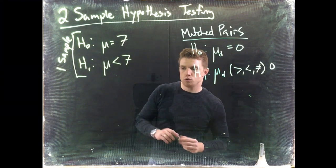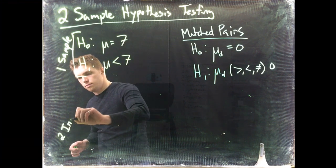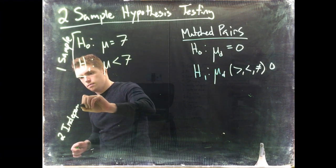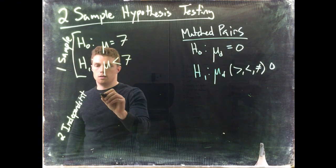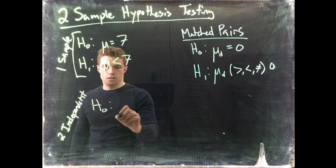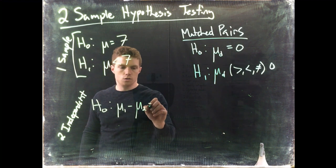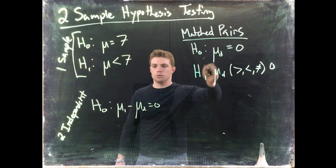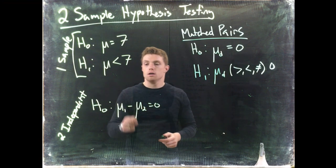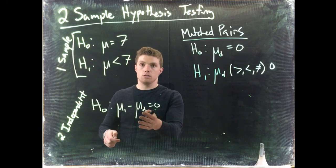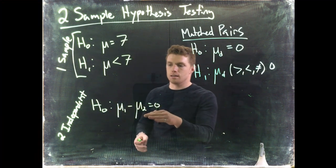Okay, so for our two-sample independent, this is what it's going to look like. We've got the null hypothesis is μ1 minus μ2 is equal to zero. Just like with the matched pairs, the baseline assumption is that the true population mean of group one is equivalent to the true population mean of group two. I like to write it like this and a lot of software writes it out like this.